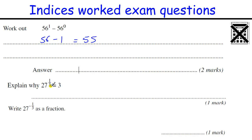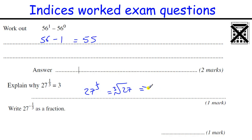Explain why 27 to the one-third is 3. The power of one-third is the cube root of 27, which means the number that times by itself 3 times equals 27. So the cube root of 27 is 3.